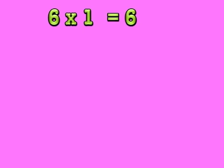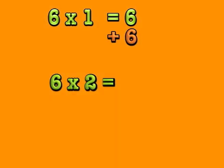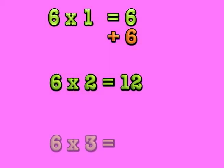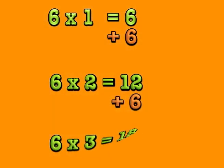If 6 times 1 is 6, 6 times 2 must be 6 more than that, which is 12. And 6 times 3 is 6 more than 12, which is 18. When I multiply by 6, it goes a little bit like this.